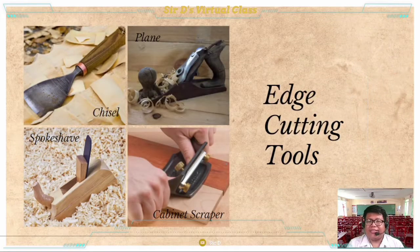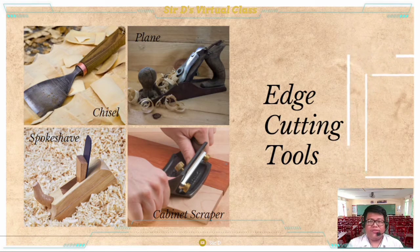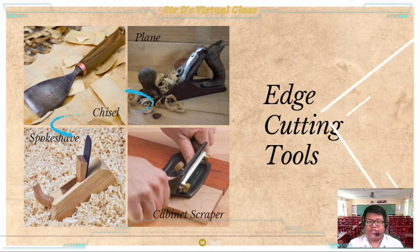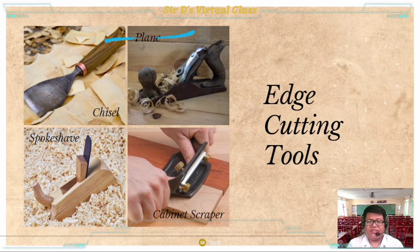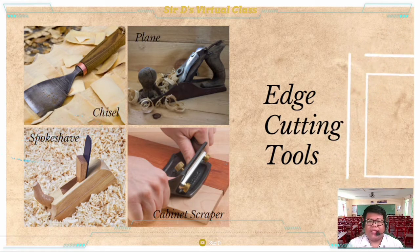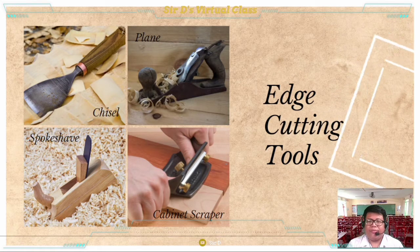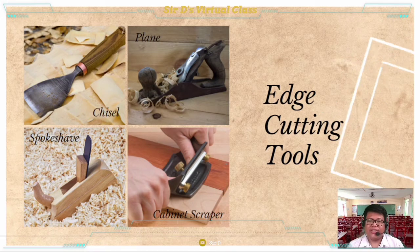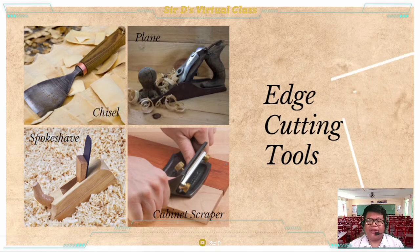For our next group, we have the edge cutting tools. This classification includes four tools: the chisel, used to trim and shape wood; the blade, used to obtain a smooth and flat surface; the spokeshave, a small plane-like tool used on irregularly shaped objects; and the cabinet scraper, a rectangular piece of steel with two cutting edges used for working on flat and curved shapes.